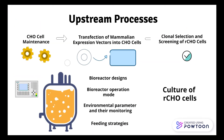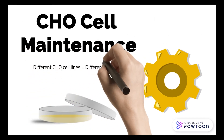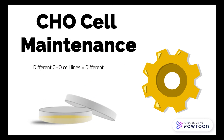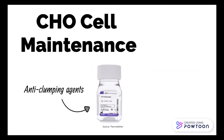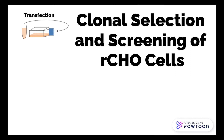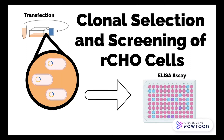This is an overview of the upstream processes of monoclonal antibodies from CHO cells. Different CHO cell lines use slightly different modified growth media, with the addition of glutamine, antibiotics, and anti-clumping agent. The transfected CHO cells will then clone themselves to form numerous copies.